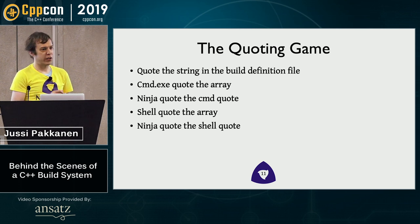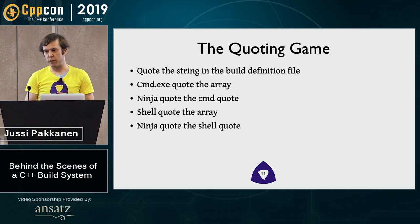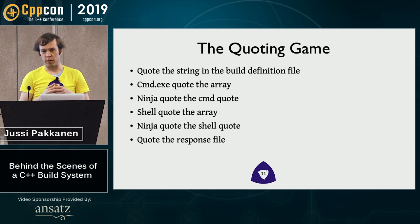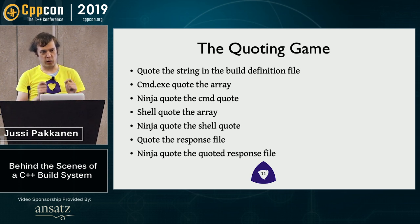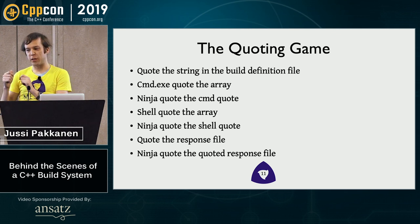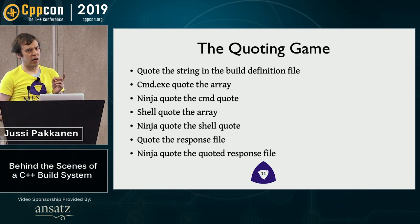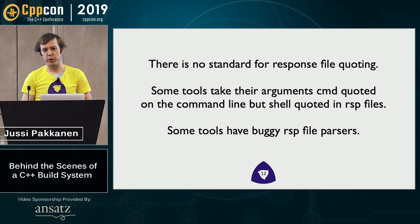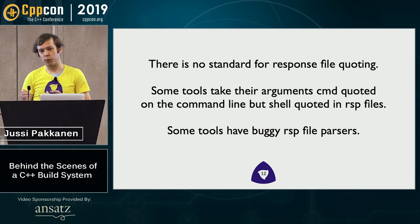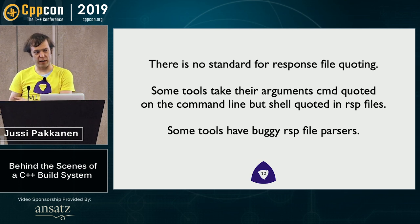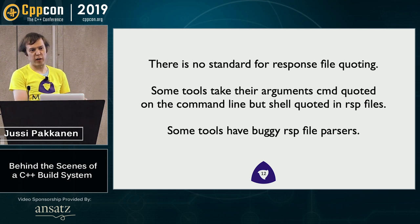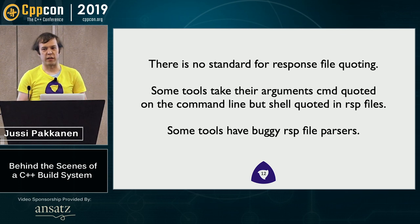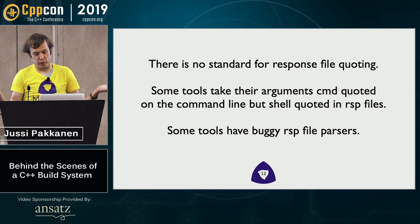But this is not enough. Because on Windows the command line argument length is quite small, you often need to use response files. So you need to quote the response file you want, and the content of the response file first needs to go into the Ninja file, so you need to quote that. Then the question is, how do you quote the contents of the response file? The answer is that you can't tell — there is no standard for that. Some tools take their command line arguments quoted on the command line; some take them shell-quoted when they have a response file; some have bugs in their response file parsers because there is no standard.